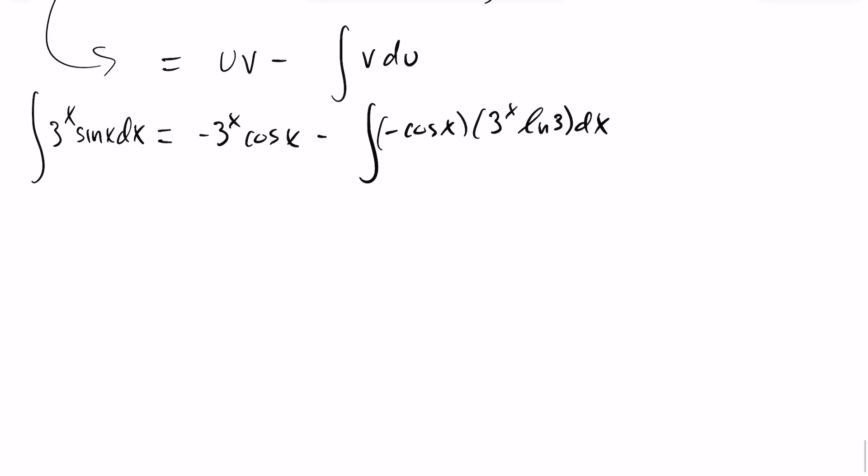Let's clean this up a bit here. So the integral of 3^x sin(x) dx is going to equal negative 3^x cos(x) plus, I can factor out that constant term, the ln(3), giving us the integral of 3^x cos(x) dx.